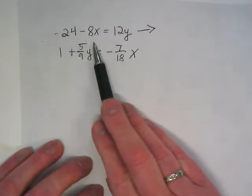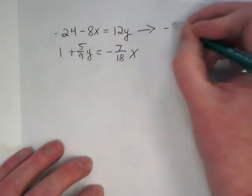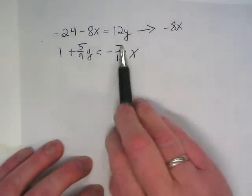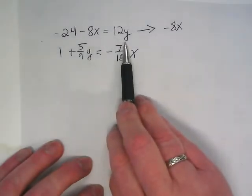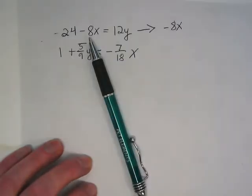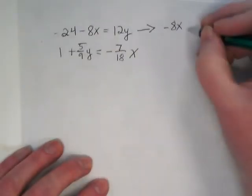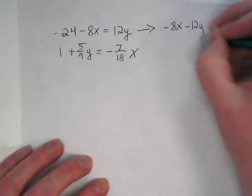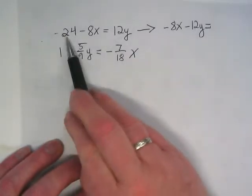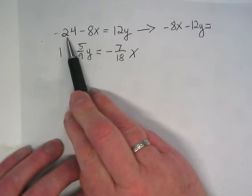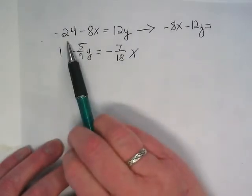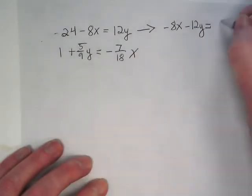The negative 8x stays. The 12y is positive, and on the right side of the equals sign, we need to move it to the left, so what's going to happen? It'll be a negative 12y. And the negative 24 has to move to the right side of the equation, so it's going to become a positive 24.